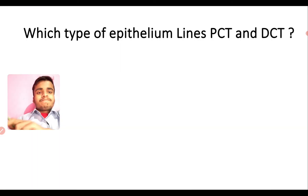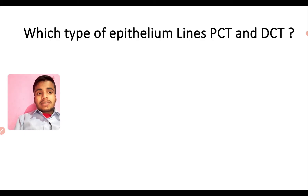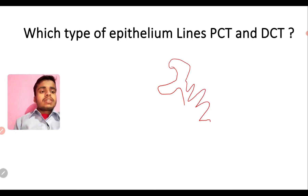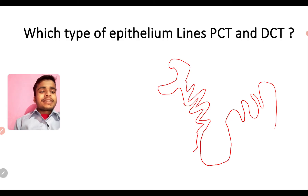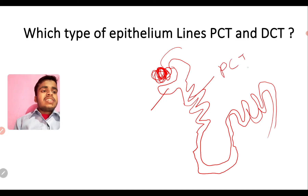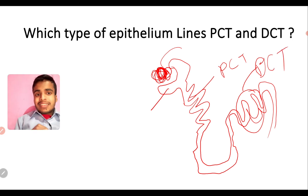First question: which type of epithelium lines the PCT and DCT? PCT and DCT are parts of the nephron in the excretory system of the kidney. This is just a symbolic diagram — a symbolic representation of the nephron structure. We have the Malpighian corpuscle, Bowman's capsule, glomerulus, PCT, and DCT.